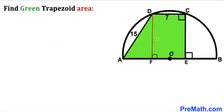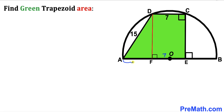In this next step, I have dropped perpendicular DF onto diameter AB. We can observe that CD length equals segment FE, so if CD is 7, then FE is 7 units as well. Let's assume that segment AF has length X units.